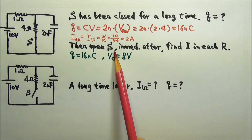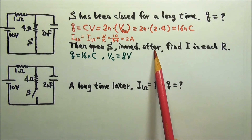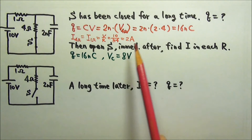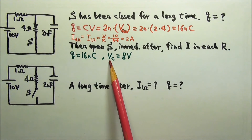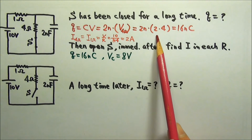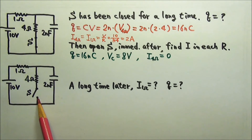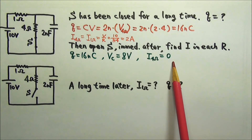Then the switch is opened. Immediately after, there is not enough time for the charge on the plates to change. So the charge on the capacitor is still the same 16 nano coulombs, and that means the voltage across the capacitor is still the same 8 volts. With the switch open, no current can flow through the 4 ohms, so the current through it is zero.